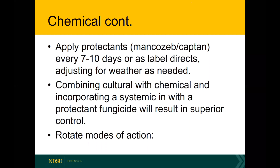As the plant continues growing, new tissue will not have any protectants on it. Systemics will move through vascular tissues into new tissues to some degree. Your best bet for controlling this disease is combining cultural practices — removing mummies and opening up the plant with proper pruning — along with chemical applications. When you apply chemicals, you'll want to incorporate both a systemic and a protectant fungicide to get adequate control. Also rotate modes of action for the systemics.